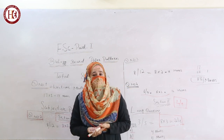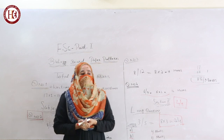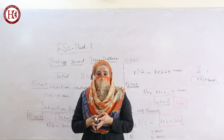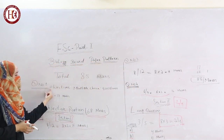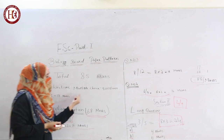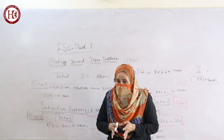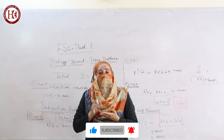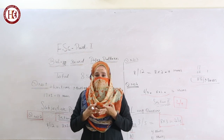Your Biology paper is of 85 marks. You have to attempt it according to the instructions and according to marks. In the Objective section with 17 marks, you have to circle the correct option. Read the statement carefully. Out of the four options given, circle the one that is the most appropriate.